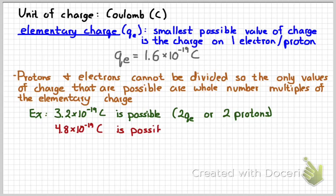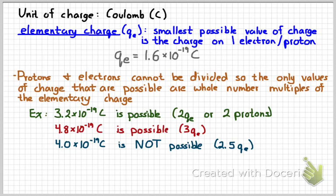You can have a value of 4.8 times 10 to the negative 19 coulombs. That would be three protons. But you cannot have a value of 4 times 10 to the negative 19. That would be like two and a half protons, and you can't have two and a half protons. The same way you can't have two and a half people.